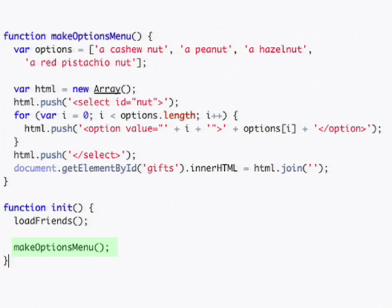Then we modify our initialization function so that instead of just loading our friends, it also loads the gift menu when the gadget loads.